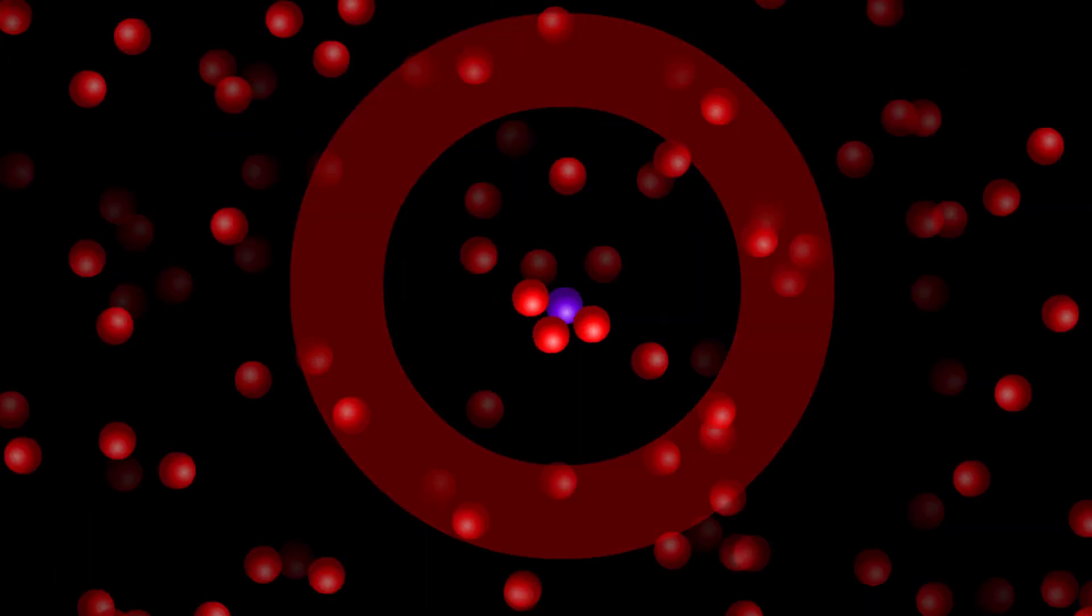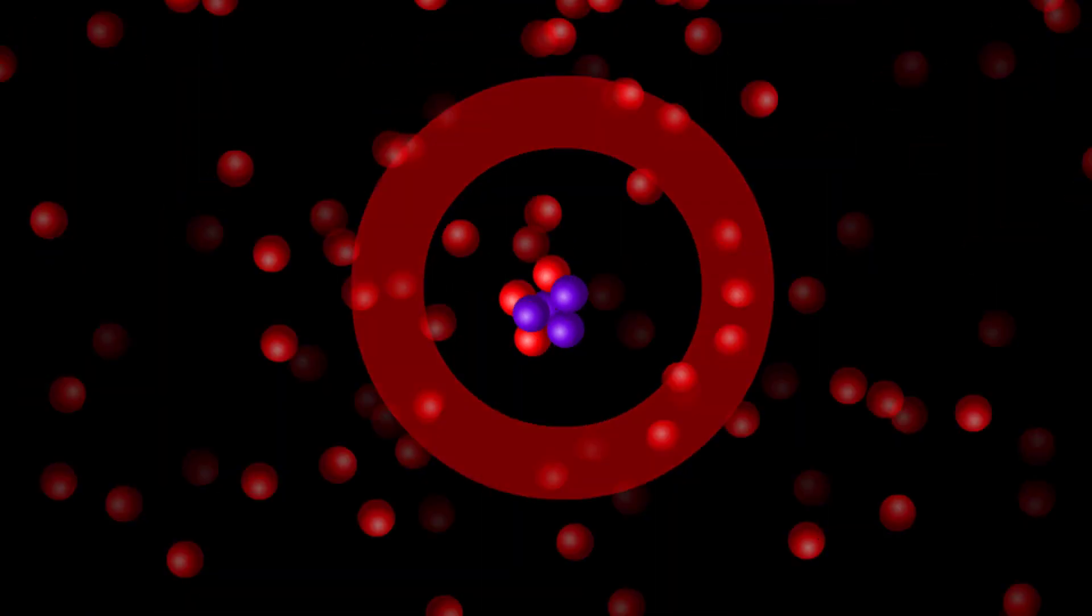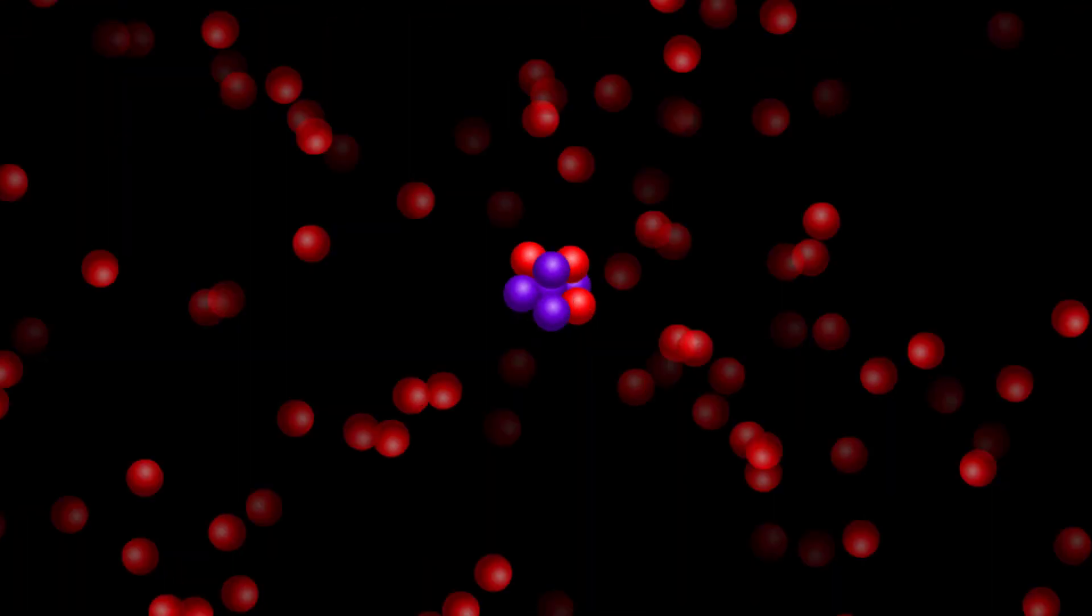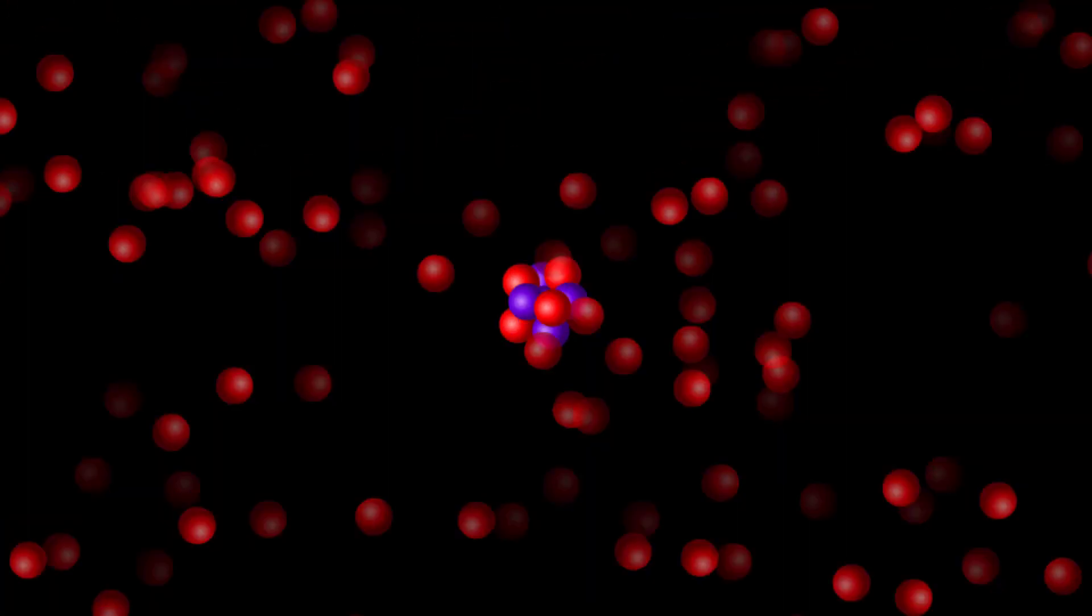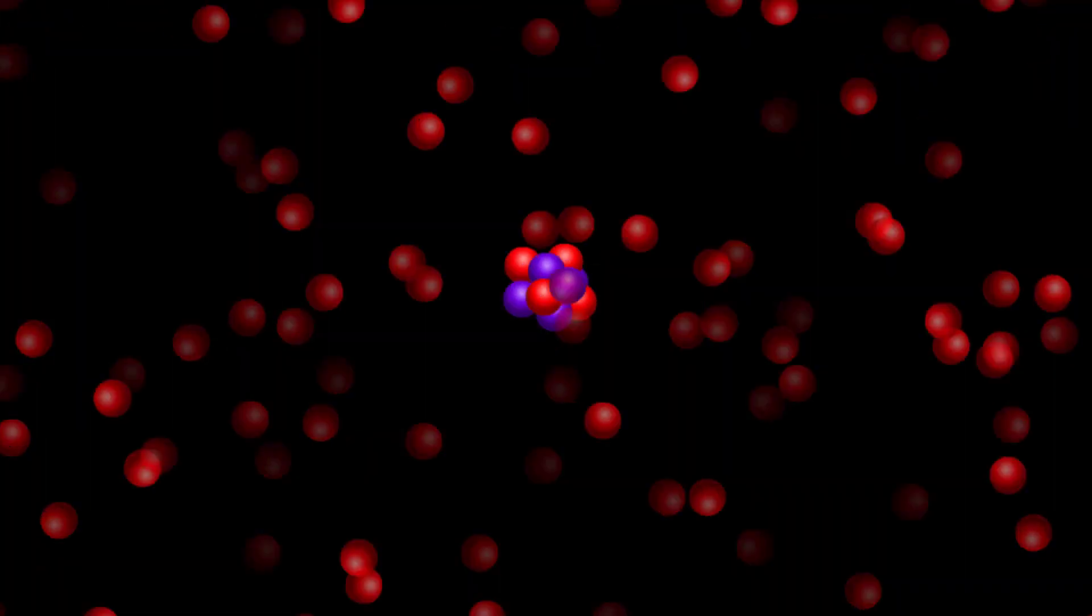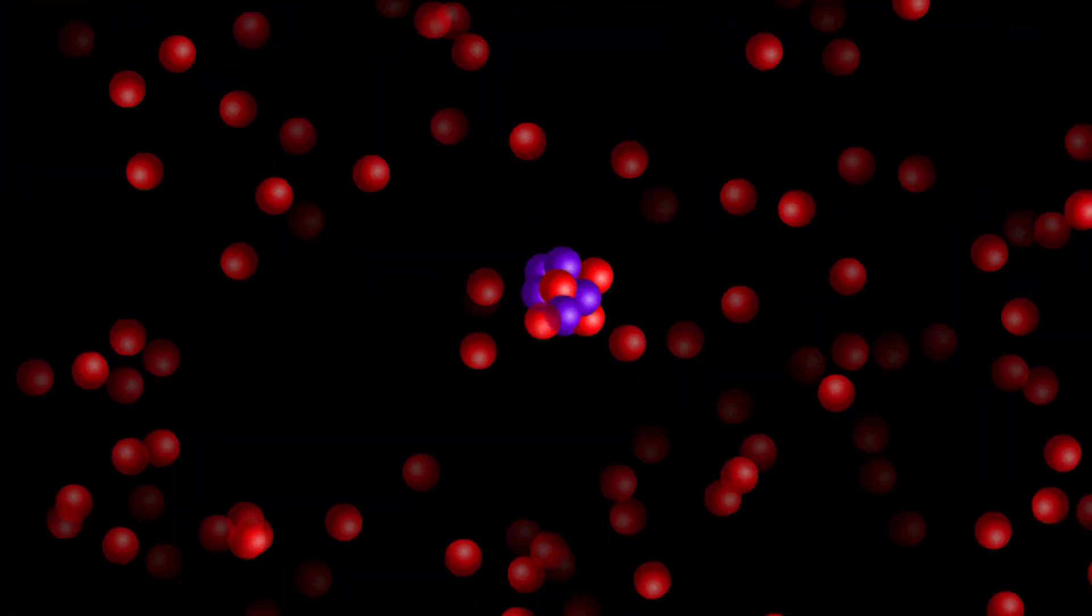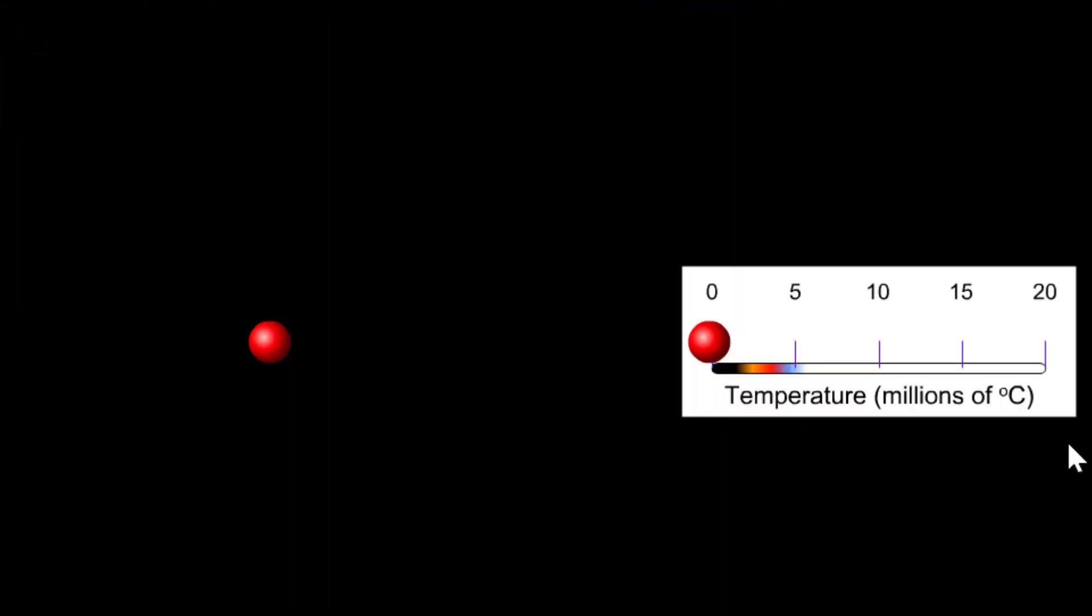Even at the centre of the sun, with its huge pressures and temperatures, fusion between two nearby hydrogen nuclei is very rare. But because the sun is so huge, that still means there's enough fusion to create all the heat and light that we experience on Earth.